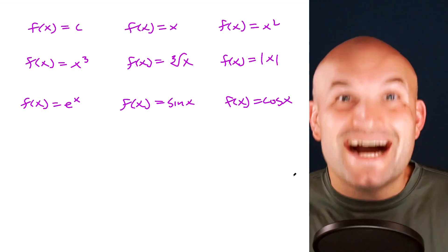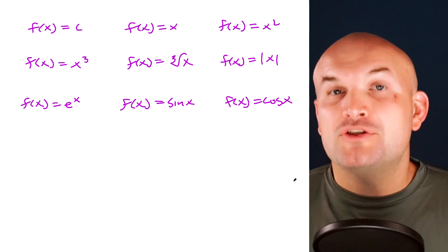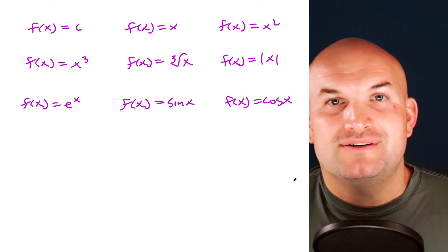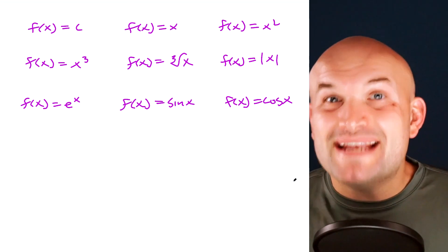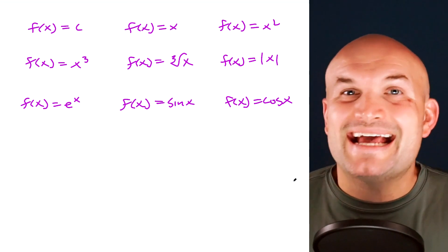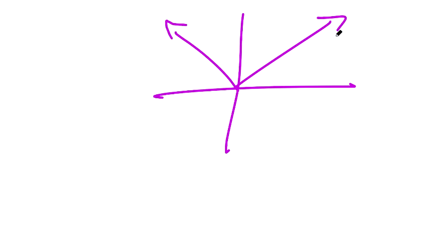Functions with a domain of all real numbers include: the constant function, the identity function, the quadratic function, the cubic function, the cube root function, the absolute value function, the exponential function, the sine function, and the cosine function. Knowing these graphs and how transformations affect them will save you a ton of time finding domains, rather than having to struggle graphing each one from scratch.